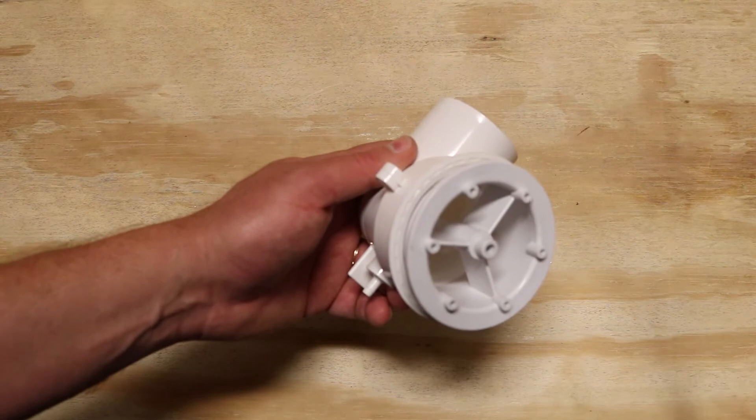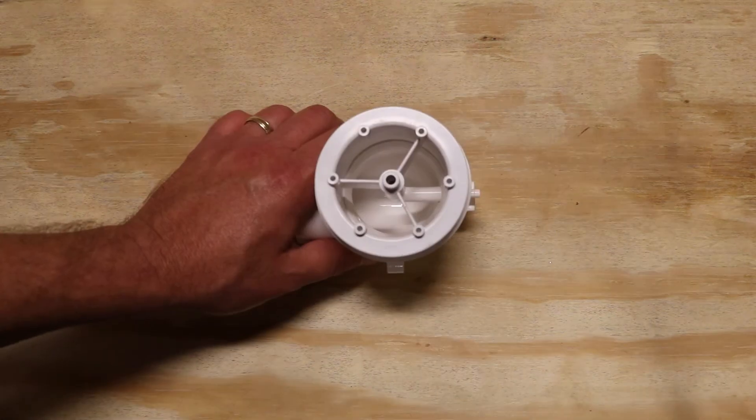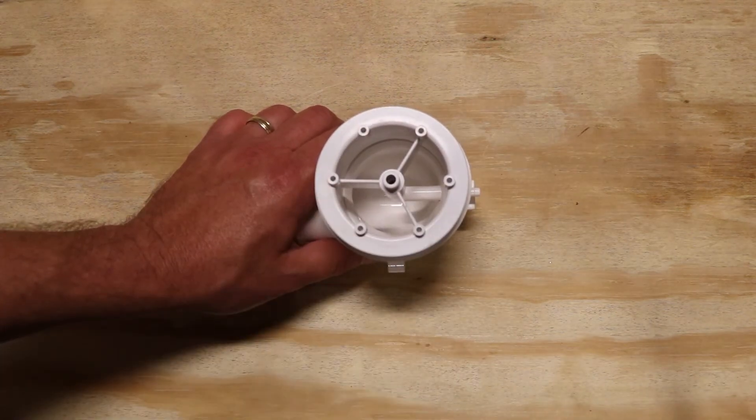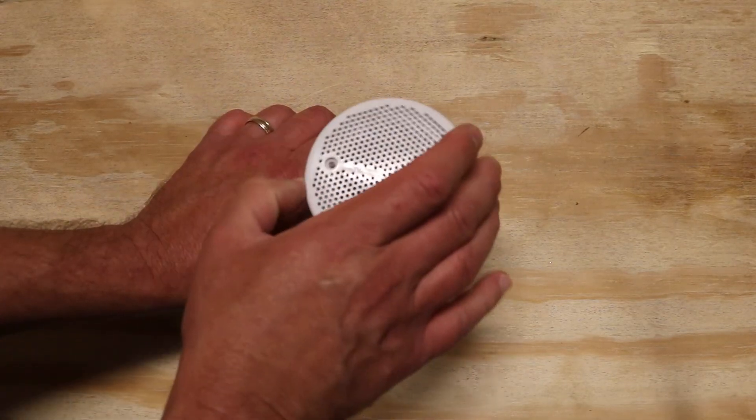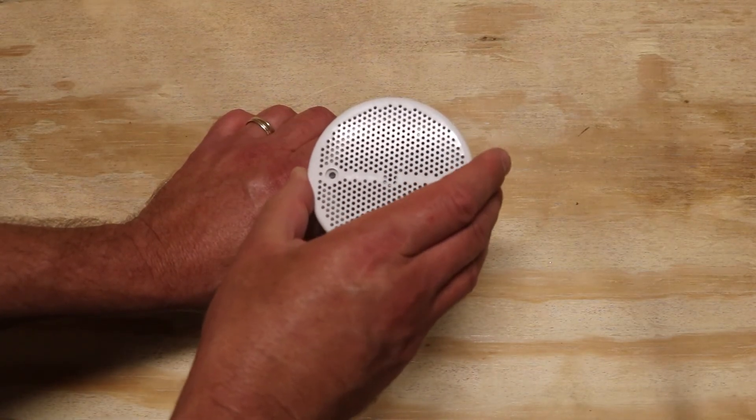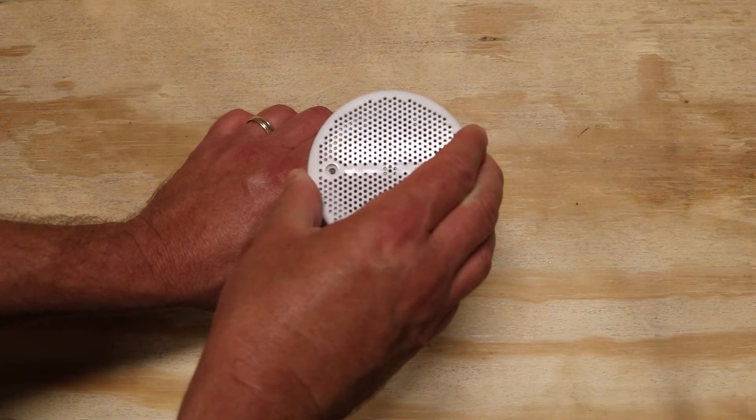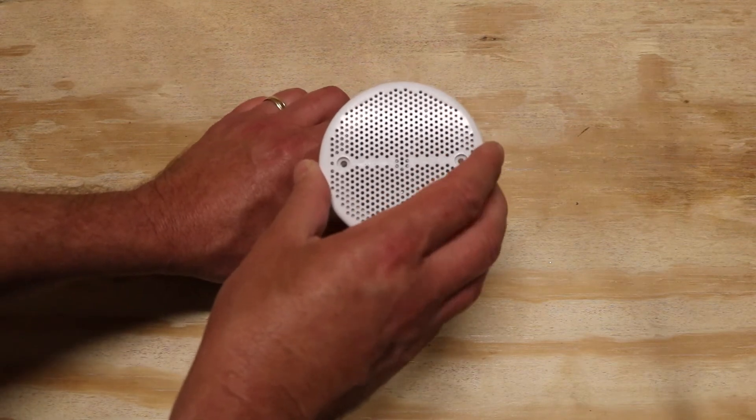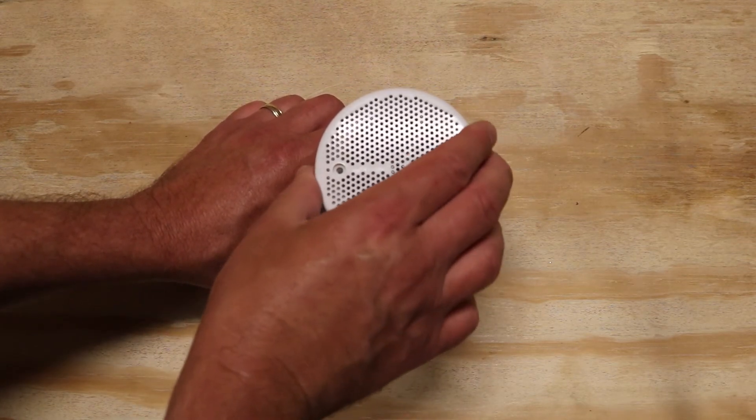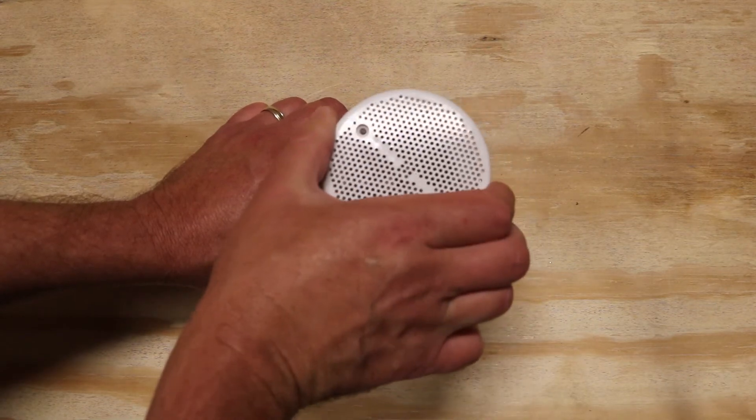Now you're going to notice it has six studs here for the suction cover to go on to. You're going to pick any two of those. You can line it up however you want for aesthetic purposes. I line this up perfectly straight across just to show you guys in the video, but pick any two of these holes to line up your holes for the suction cover.